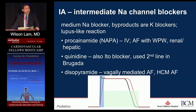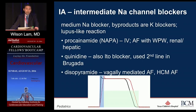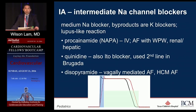Procainamide is predominantly IV in the U.S. — there is an oral form in Canada, but you probably won't be using it. It's a class 1 indication for atrial fibrillation with pre-excitation, particularly if the patient is hemodynamically stable. Procainamide is renally cleared but acetylated by the liver into N-acetyl procainamide (NAPA). Quinidine is also a transient outward rectifier current blocker, sometimes used in Brugada and VTs. Disopyramide is sometimes used in vagally mediated AF, particularly because of its anticholinergic properties; it's also a negative inotrope used in hypertrophic cardiomyopathy with atrial fibrillation.